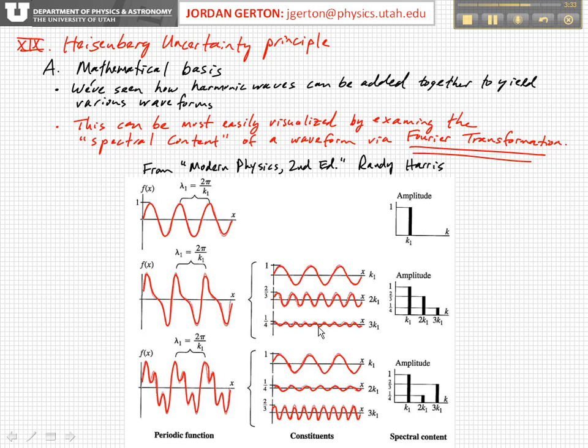And finally, we have a third wave, three times the wave vector, three times the wave number 3k1. That means it's one-third the wavelength, and now we have an amplitude of a quarter. So if we added those three waves together with this phase relationship, then we'd get this waveform.